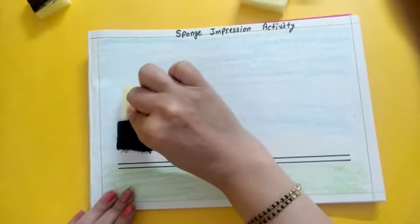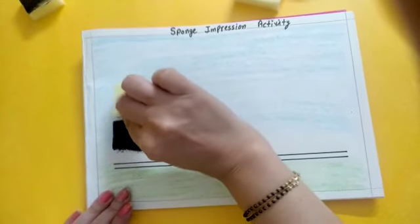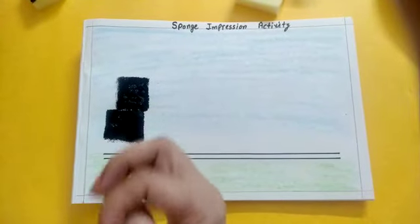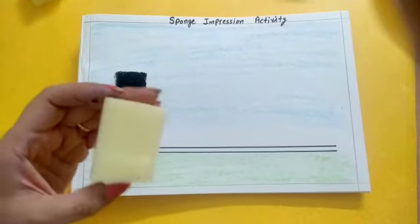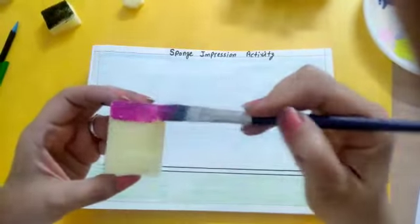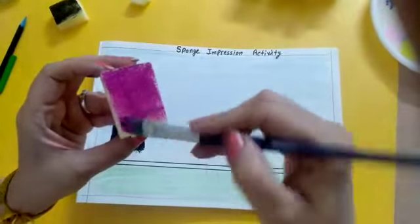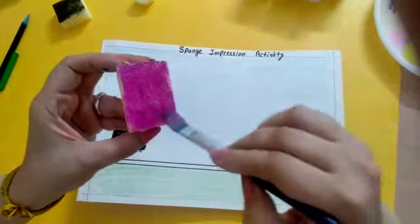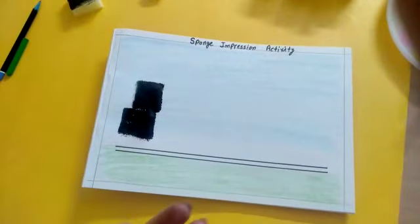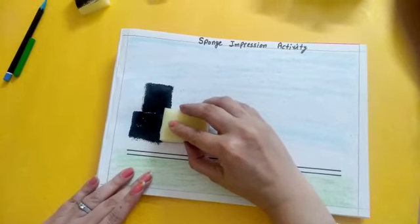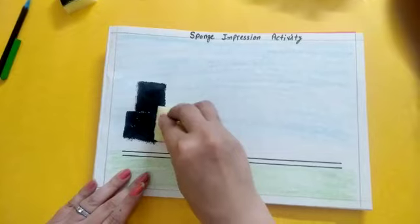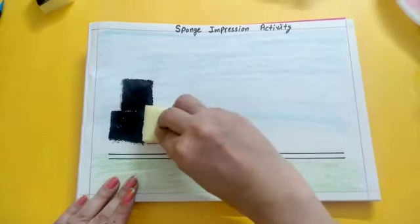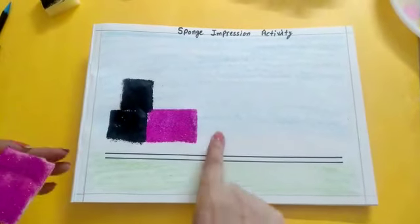Press it properly. Yes. Now using this—I'm going to use this rectangle sponge. It's pink color, you can use any color. Yes, now give the impression here. Give impression like this. Yes, like this.